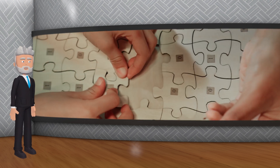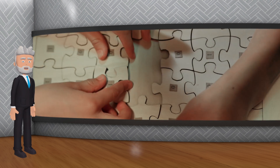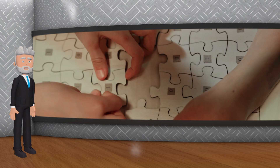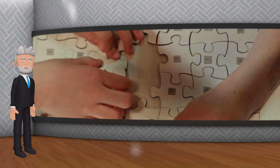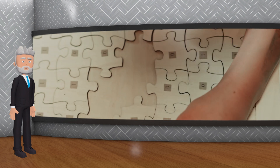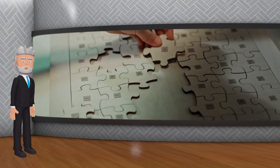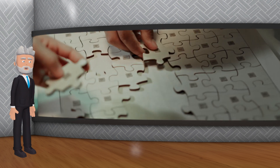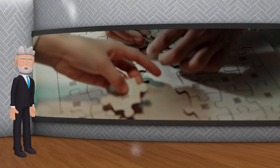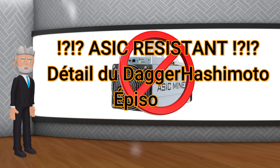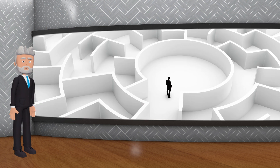Imaginez ETHash comme un grand puzzle gigantesque. Pour résoudre ce puzzle, vous devez assembler des pièces qui se trouvent dans un grand sac. Certaines de ces pièces doivent être assemblées dans un certain ordre pour que le puzzle soit résolu. Plus il y a de pièces, plus le sac est grand, plus il est difficile de résoudre le puzzle rapidement, surtout pour ceux qui ont des machines spécifiques ASIC.